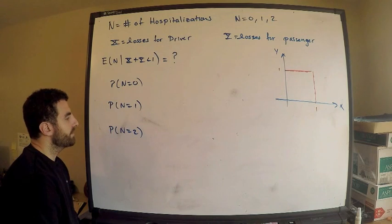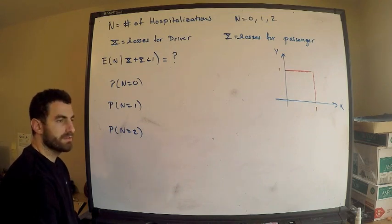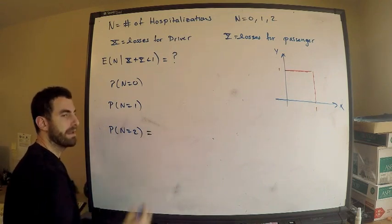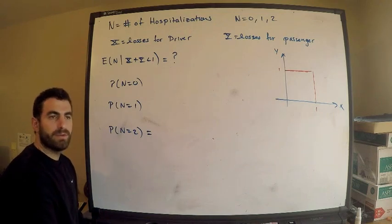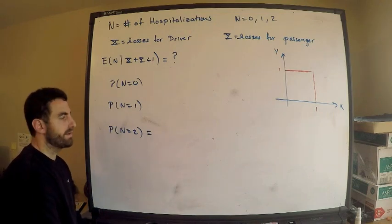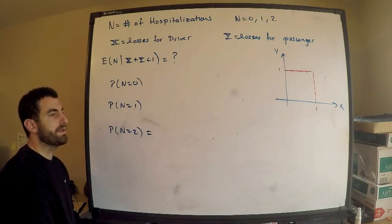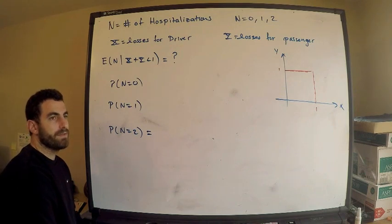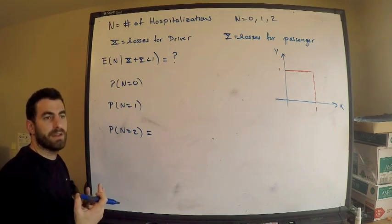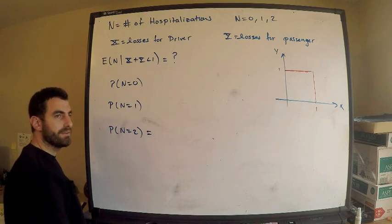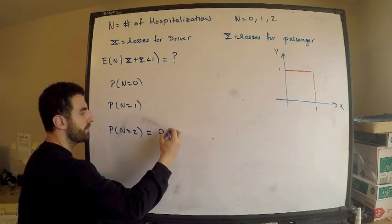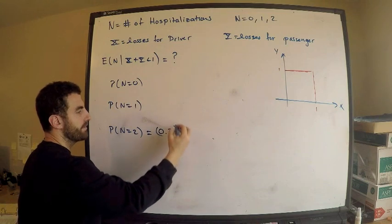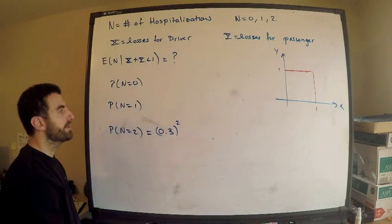I'm actually going to start with N equals two — I think that's maybe the easiest one. We're told that the probability that one person is hospitalized is 0.3. These are independent events — the passenger and driver being hospitalized are independent — so we can multiply these probabilities. So this is 0.3 times 0.3 because they both get hospitalized, so squared.